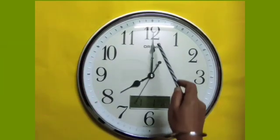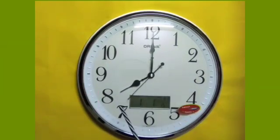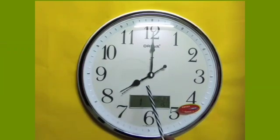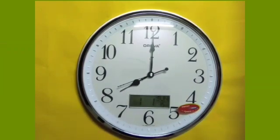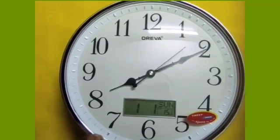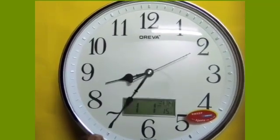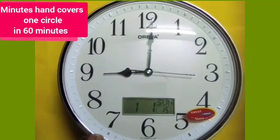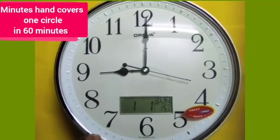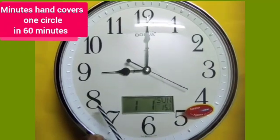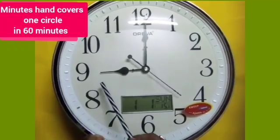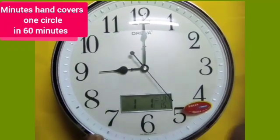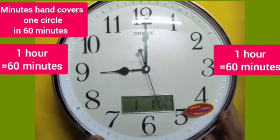Now, the longer minute hand is at 12 and the shortest hour hand is at 8. This minute's hand completes one circle of this clock in 60 minutes. Now, see, dear children, the shortest hour hand moves from 8 to 9. This shows there are 60 minutes in one hour.